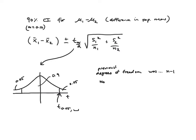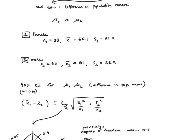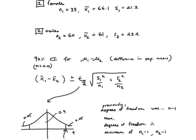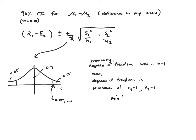Now that we have n1 and n2, the rule for degrees of freedom is the minimum of (n1 minus 1) and (n2 minus 1). Going back to our values of 33 and 60, we take the smallest and subtract 1: it's the min of 32 and 59, which gives us 32 degrees of freedom. I then go to the t-table and look up t-0.05 with 32 degrees of freedom — if I don't have exactly 32 in the table, that's okay.